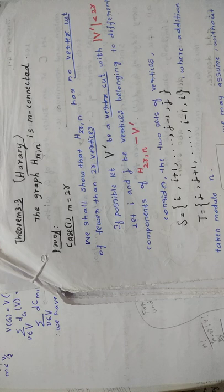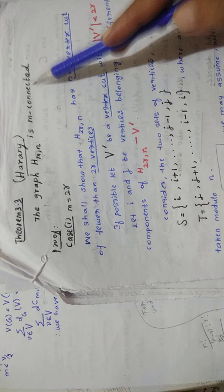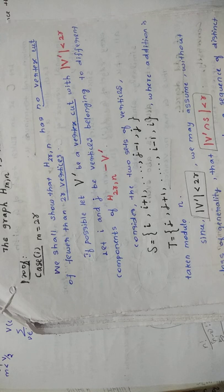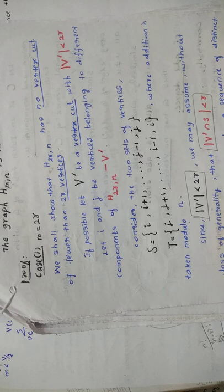I hope you understand the concept. The graph H(M, N) is M-connected — that is what we have to prove. We are proving this theorem by two cases. First, you are taking M equal to 2R, that is, the M number of connectivity is an even number.